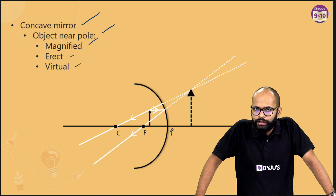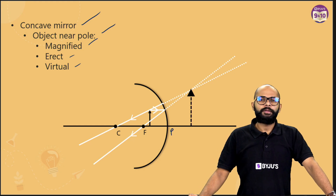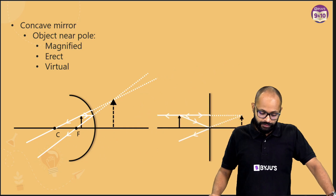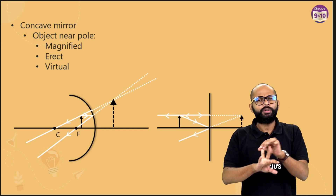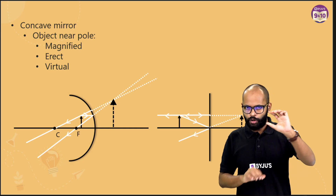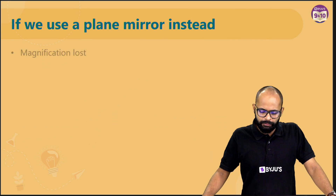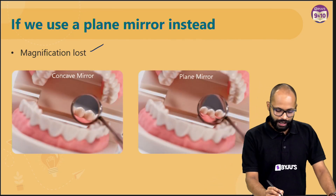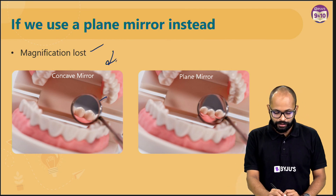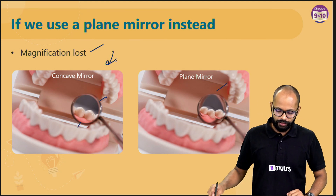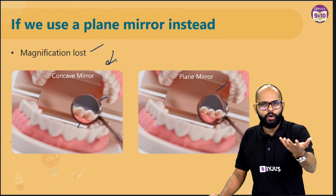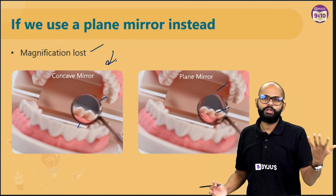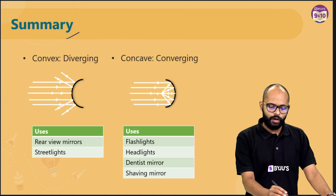What if we use a plane mirror instead? In a plane mirror, you will always get a same-sized image. It will be virtual — check. It will be erect — check. But it won't be magnified; the object size equals the image size. So you lose magnification. In a concave mirror you can see a bigger version of a tooth; in a plane mirror you might see more teeth but not magnified. You lose the ability to see a magnified image, which is exactly what a dentist needs.